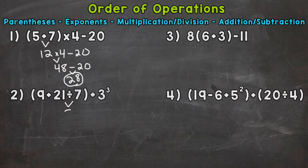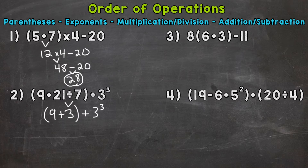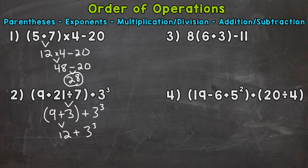and that's going to give us 3. Bring down everything we did not use and keep everything in the same exact order. We want to keep those parentheses around the 9 plus 3 until you solve everything within them. Now let's go through our process again. Do we have any parentheses? Yes. So that's what we do next. 9 plus 3 is 12. Bring down everything we did not use in the same exact order and continue. Any parentheses? No.